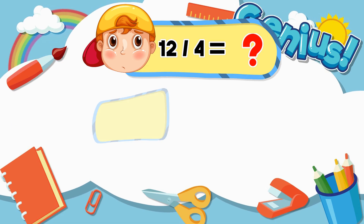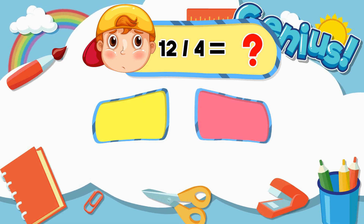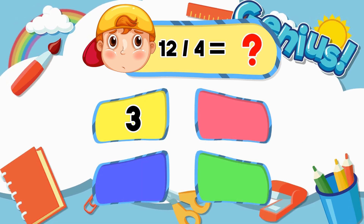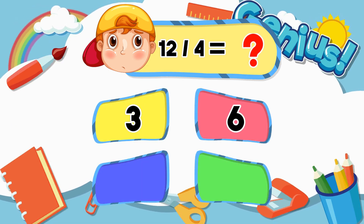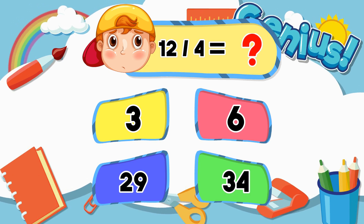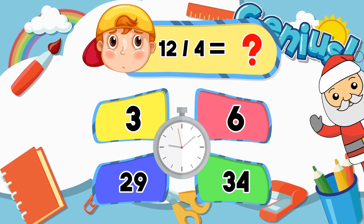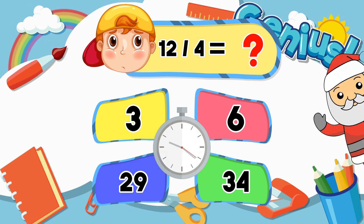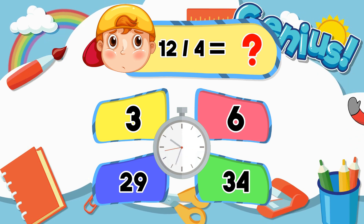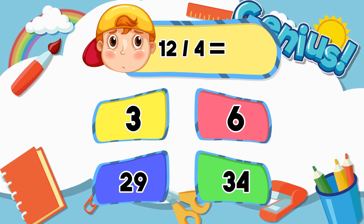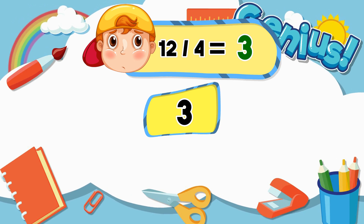What is twelve divided by four? Three, six, twenty-nine, thirty-four, four. Three.